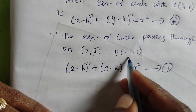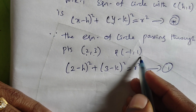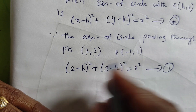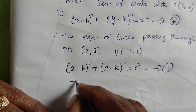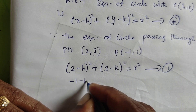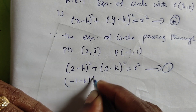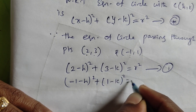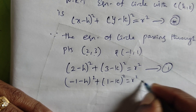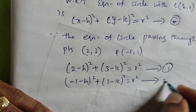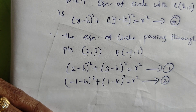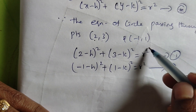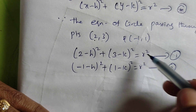The second point is (-1, 1). Substituting x = -1 and y = 1 gives: (-1 minus h) squared plus (1 minus k) squared equals r squared. Since the right-hand sides are equal, the left-hand sides are also equal.